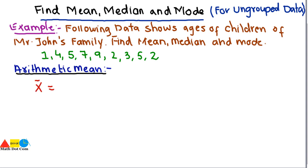So for finding the arithmetic mean, you just need to follow a formula that is x̄ equals summation of x divided by n. x is basically the observations or the ages of the children's data given in the example, and n is the number of observations.